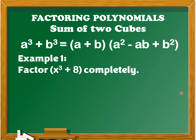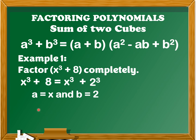So let's have example number one. Factor x cubed plus 8 completely. The first step is we're going to write x cubed plus 8 in the form of a cubed plus b cubed. So we have x cubed plus 2 cubed, since 2 cubed is equal to 8 — that is 2 times 2 times 2. The value of a is x and the value of b is 2.